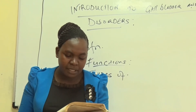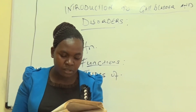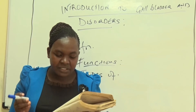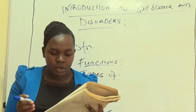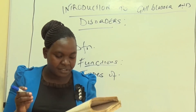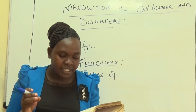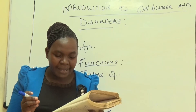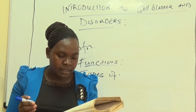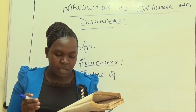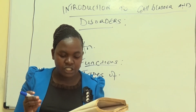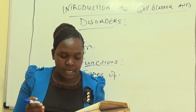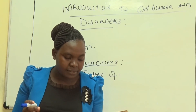Then there is pigment gallstones. This is the dark brown or black stone form, whereby the bile contains too much fat.